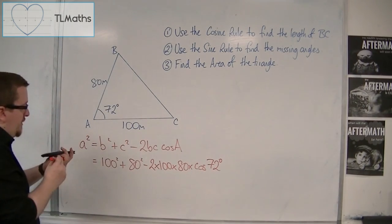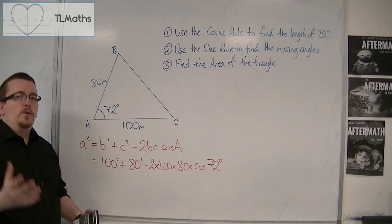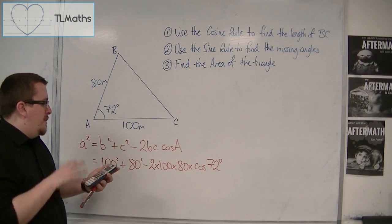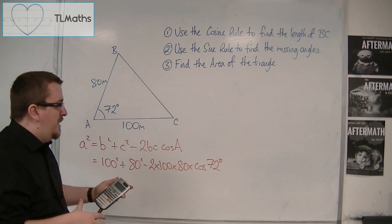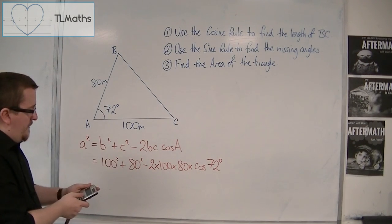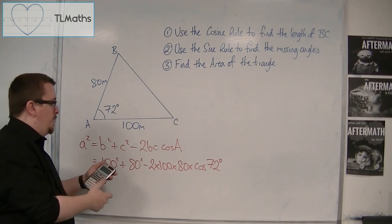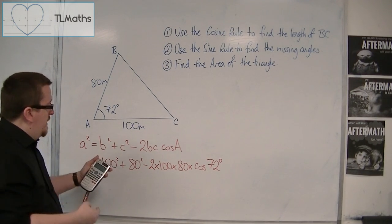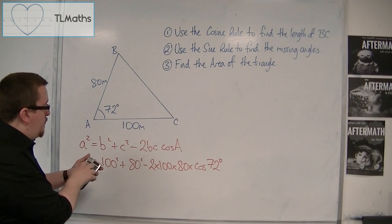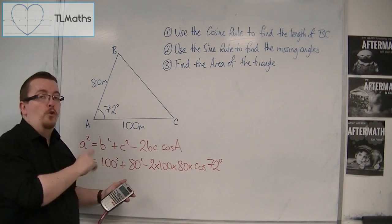Now, you need to make sure that your calculator is in degrees mode. So, for a Casio, like the FX991ES+, OK, to get it into degrees, you've got to go to shift, then mode, to go into the setup. And then you've got the choice of number 3 or number 4, degrees or radians.